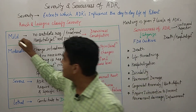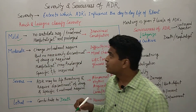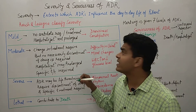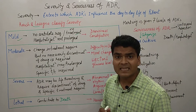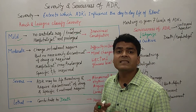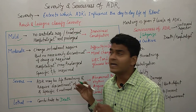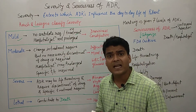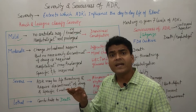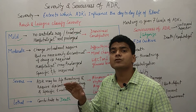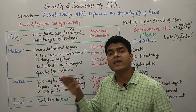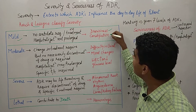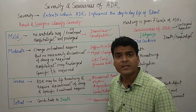The first type is mild. In mild ADR, there is no antidote requirement, or we can say no treatment is required. It is not necessary that treatment is required in that particular condition. Hospitalization is not prolonged. If a patient is admitted, the duration of hospital stay will not increase. Examples include drowsiness and constipation — for instance, opioids cause constipation.